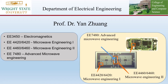Microwave Engineering Two covers the active components, for example, power amplifiers. For students who take Microwave One and Two together, they will have the full knowledge of microwave technology. An additional core course in the microwave field is EE7480 Advanced Microwave Engineering, which covers high-speed electronics operated at high frequency.